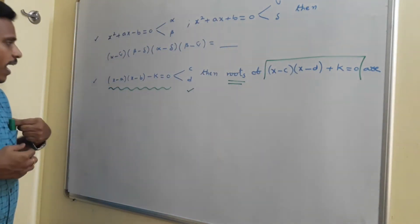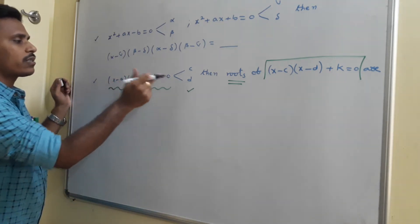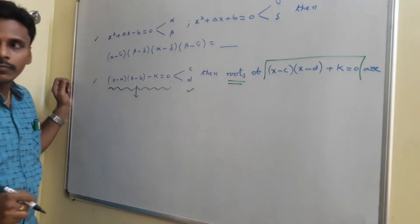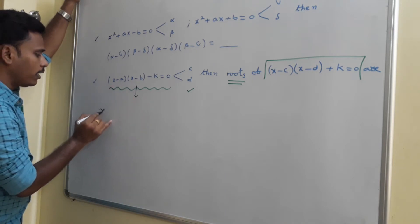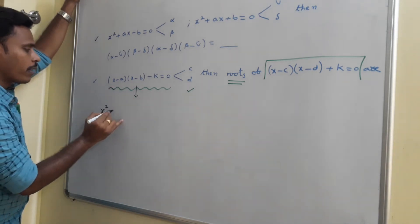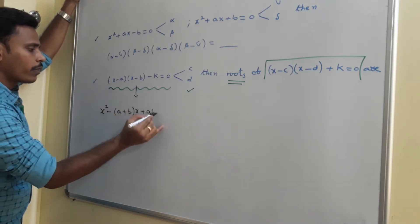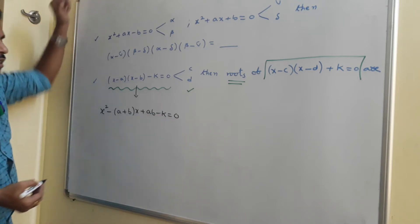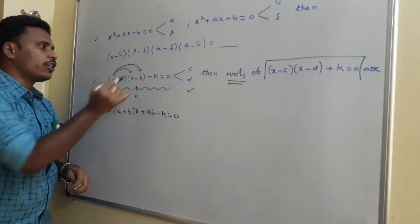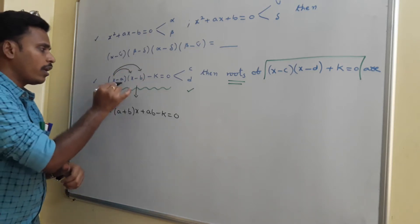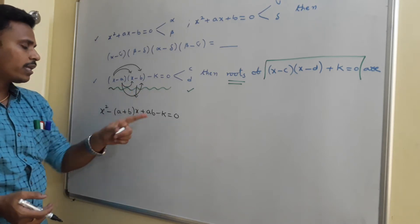The first equation is (x minus a)(x minus b) minus k equals 0, whose roots are c and d. Multiplying it out: x² minus (a+b)x plus ab minus k equals 0. Expanding: x times x is x², x times minus b is minus bx, minus a times x is minus ax, and minus a times minus b is plus ab, minus k equals 0.